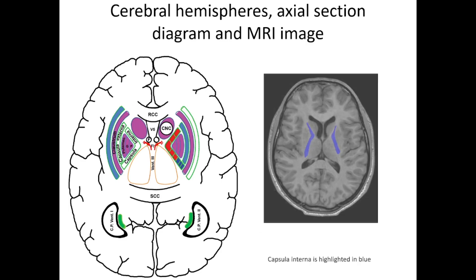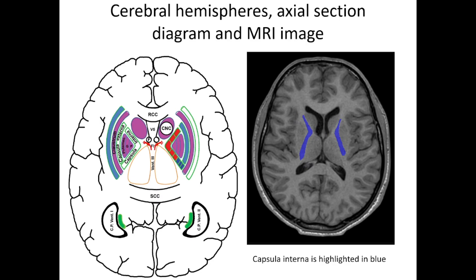Now, cerebral hemispheres — axial section, diagram, and MRI image. Capsula interna is highlighted in blue. Try to recognize all anatomical structures in the MRI image. First, this is RCC — rostrum corporis callosi. The black cavity behind it is the anterior horn of the lateral ventricle. And this is CNC — caput nuclei caudati — which forms the lateral wall of the anterior horn of the lateral ventricle.